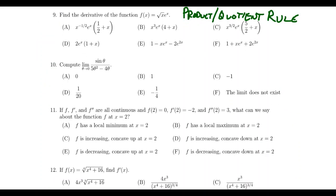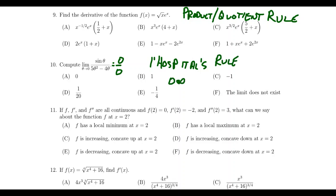Question number 10 is going to be a question about limits of indeterminate forms. For example, if you just plug in theta equals zero, you end up with zero over zero — a situation where you probably want to use L'Hôpital's rule. L'Hôpital's rule is very useful when you have a limit of the form zero over zero or infinity over infinity. We should also be prepared for things like zero times infinity, one to the infinity, and infinity to the zero. Be prepared to handle these indeterminate forms using L'Hôpital's rule. It was covered on exam four.